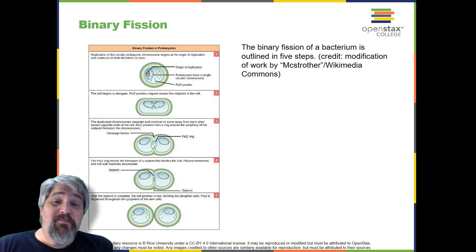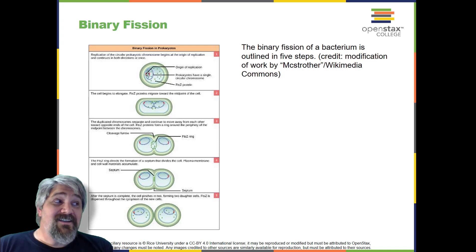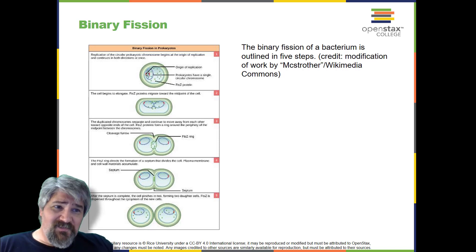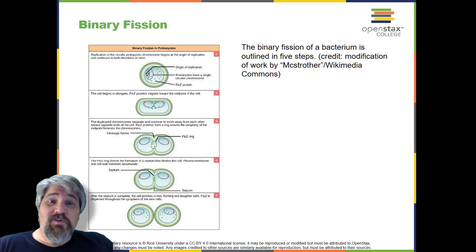After the chromosomes have cleared the midpoint of the elongated cell, cytoplasmic separation begins. A septum is formed between the nucleoids from the periphery towards the center of the cell. When the new cell walls are in place, the daughter cells separate — though some bacterial cells remain attached after cell division, like Streptococcus pyogenes, the causative agent of strep throat, which stays connected in long chains.